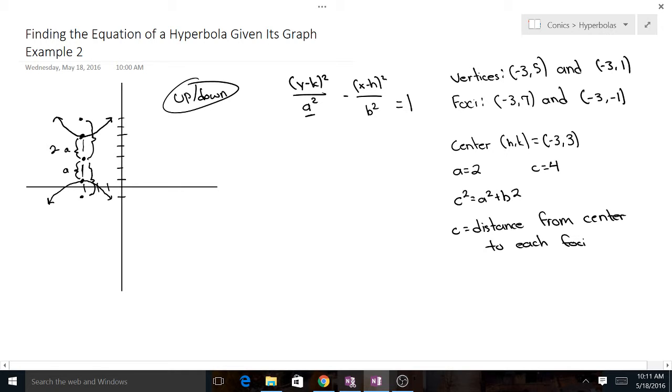Well, now we can actually solve for our b squared. So let's plug in what we have. We've got c squared, which is 4 squared, 16, equals a squared, which is 2 squared, is 4, plus b squared. We get b squared equals 12, b equals √12. We don't really need to simplify that.